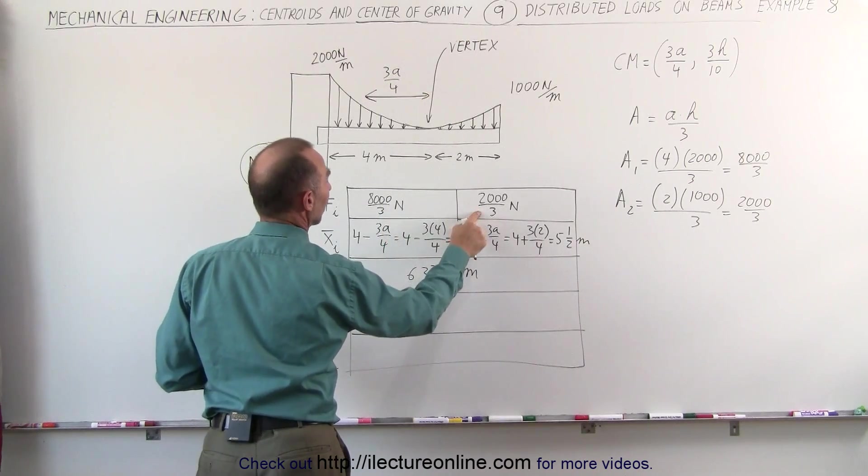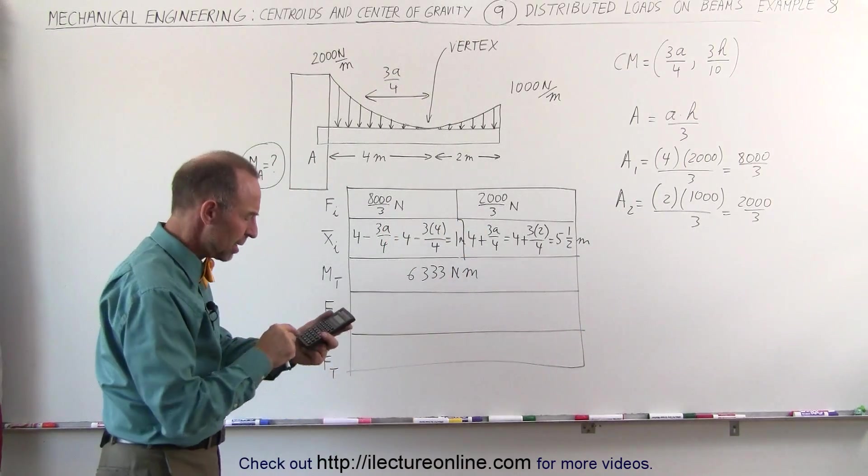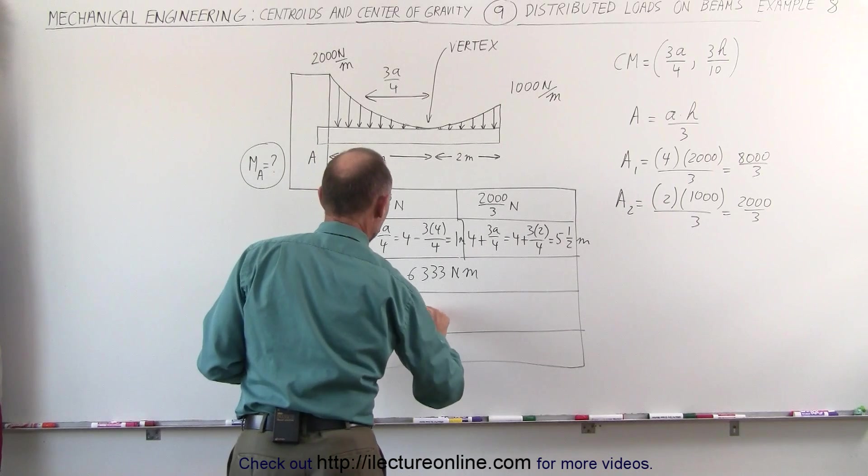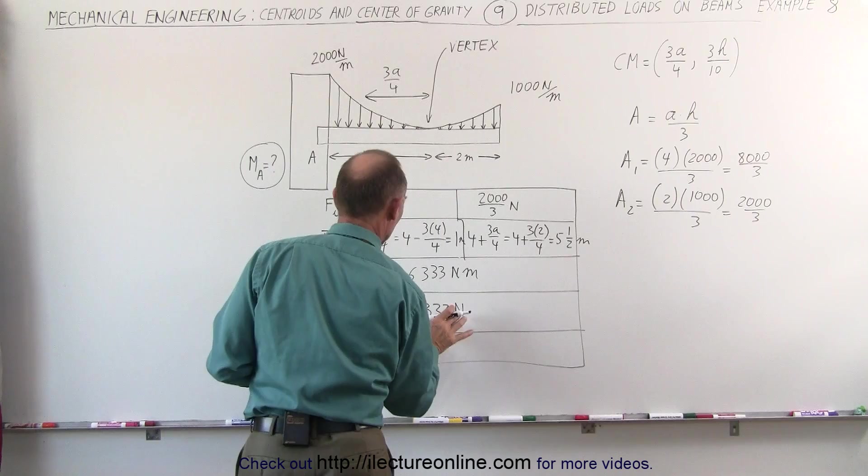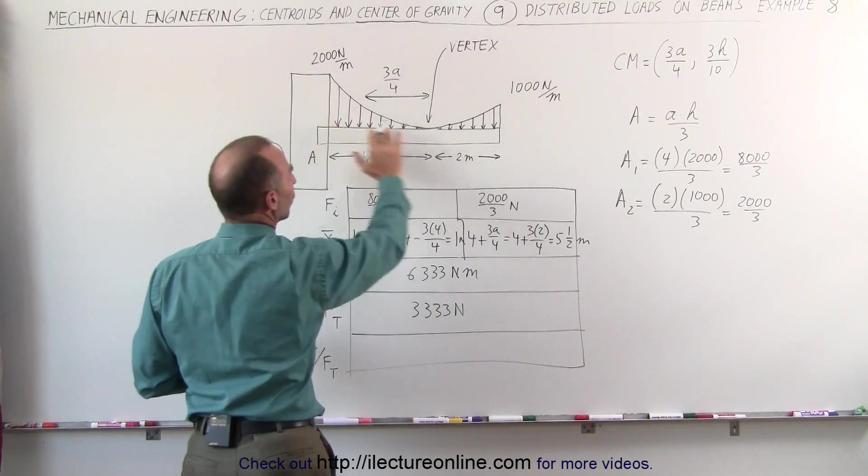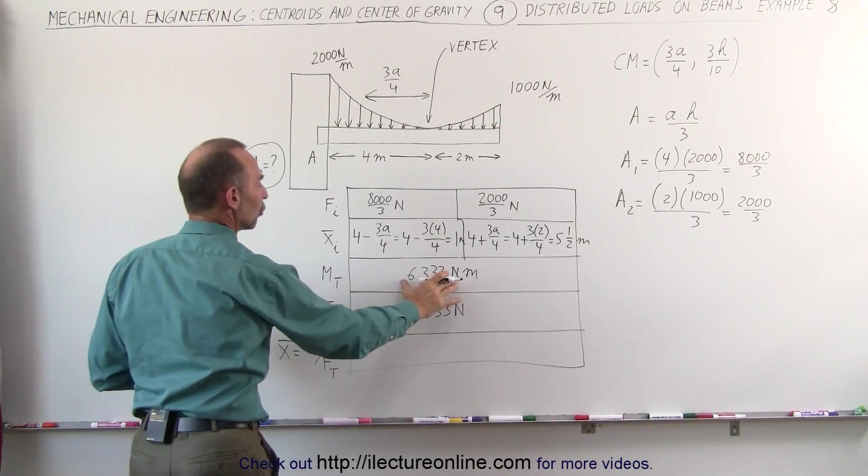8,000 over 3, 2,000 over 3, that's 10,000 over 3, that would be 3,333 Newtons for the total force by both contributions and the total moment.